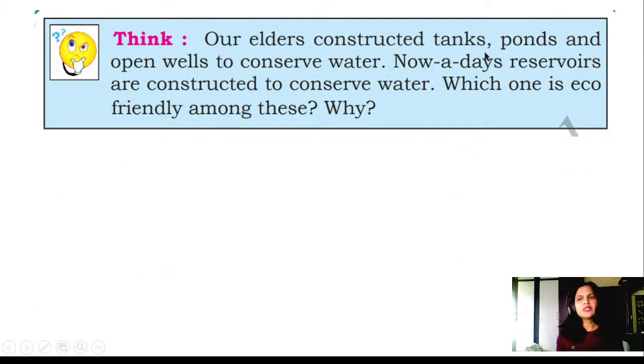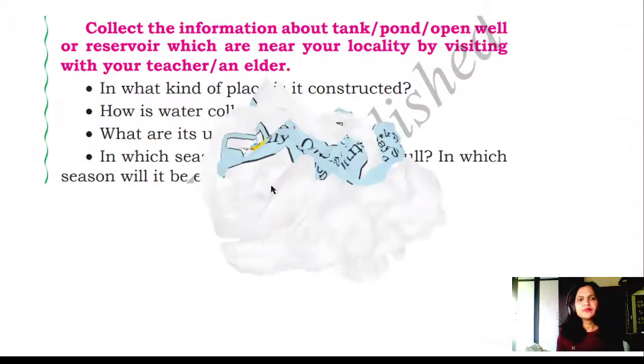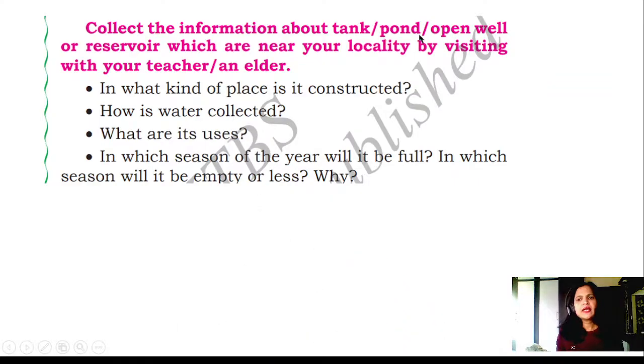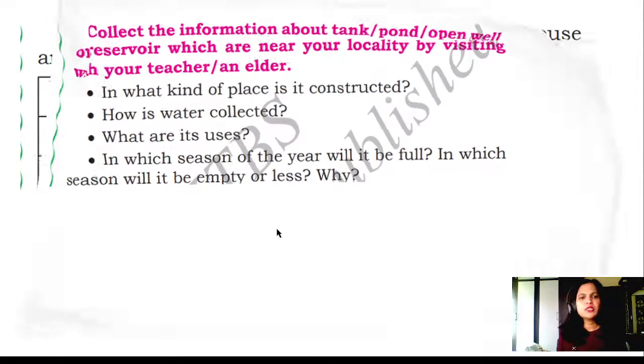Think: Our elders constructed tanks, ponds, and open wells to conserve water. Nowadays, reservoirs are constructed to conserve water. Which one is more eco-friendly among these? Why? Collect the information about the tank, pond, open well, or reservoir which are near your locality. Visit your locality, that means your local place. Where are the ponds available? Collect the name of that place. It is an activity. In what kind of place is it constructed? How is water collected? What are its uses? In which season of the year will it be full? In which season will it be empty or less? Why? You collect all the information. It's an activity.